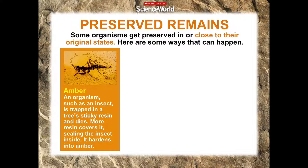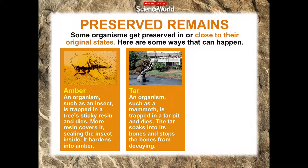Another example of preserved remains is tar. This is a mammoth that has gotten trapped in a tar pit — tar equals trapped in tar pit. Tar is what we make our streets from, and it hardens. So once an organism is stuck in a tar pit, it remains exactly like that. The tar preserves the outer organs and inner organs, and we can see it for what it is — covered in tar.